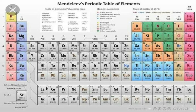In Mendeleev's periodic table, there are eight different groups: 1A, 2A, 3A, 4A, 5A, 6A, 7A, and 8A, as well as subgroups 3B, 4B, 5B, 6B, 7B, 8B, 1B, and 2B — with three columns belonging to 8B. The table also had seven periods — first through seventh. Mendeleev's periodic table had some empty spaces in it.